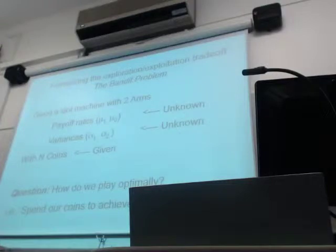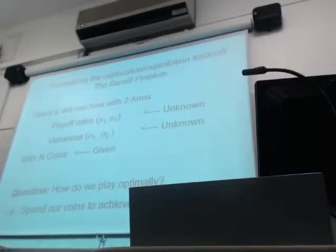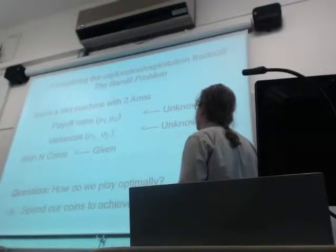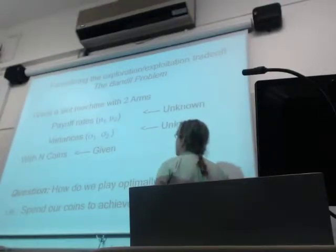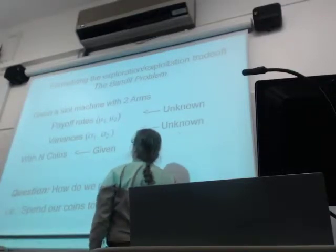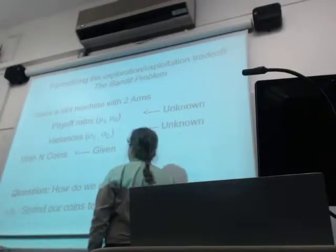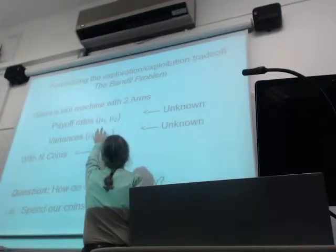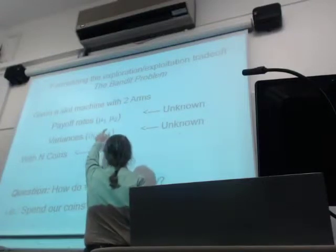An example of this is online advertising; there's a fair amount of research at UCL on this problem. The specific model where Holland proved some results assumes that each slot machine has a payoff rate corresponding to a draw from a Gaussian distribution, with each machine defined by some unknown mean and unknown variance.